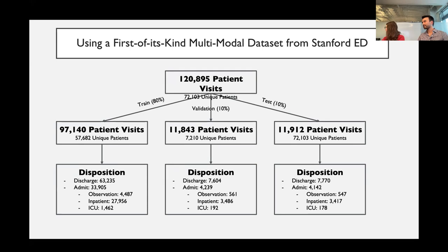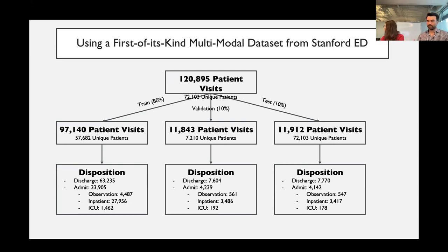As David talked about earlier, we have a dataset collected over the past two and a half years from Stanford's emergency department. This is a first-of-its-kind dataset in terms of the different modalities of data we have: continuous vitals, data available at triage, orders, results, etc. We have data from over 120,000 different patient visits. We're approaching this problem as both a binary prediction of discharge versus admit — which is done a lot in the literature, making it easier to compare — and at a more granular multi-class level: discharge, observation, inpatient, ICU. One thing to note is our data is highly imbalanced — we have many more data points from patients who are discharged than who go to the ICU.